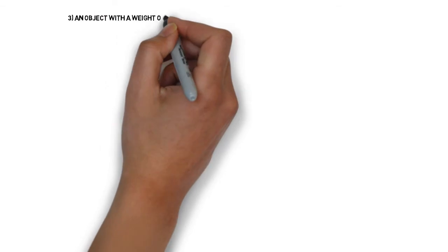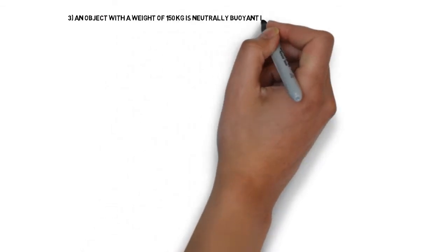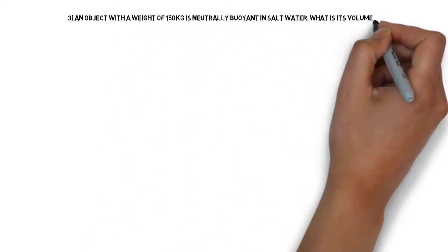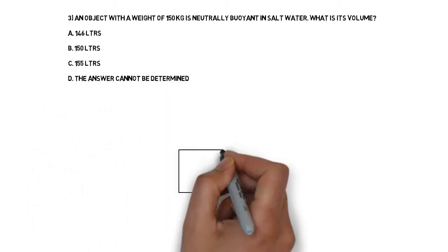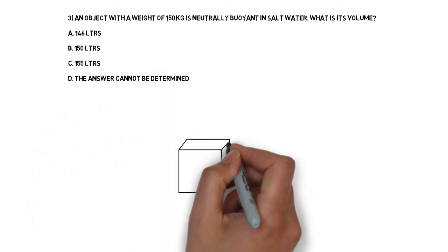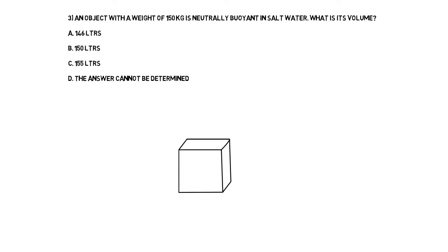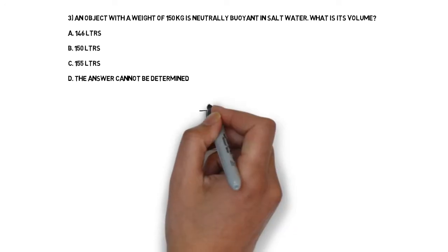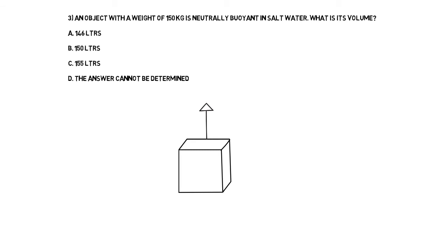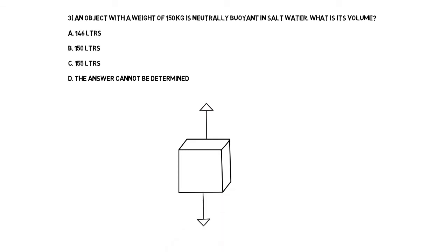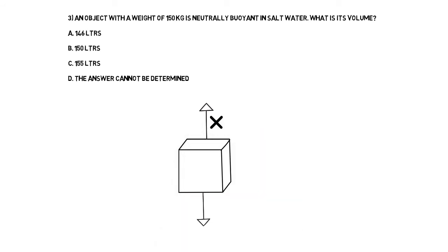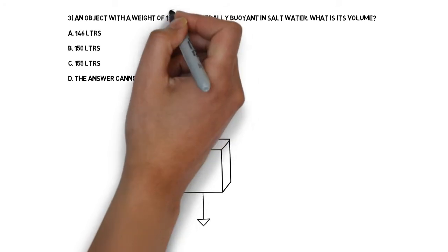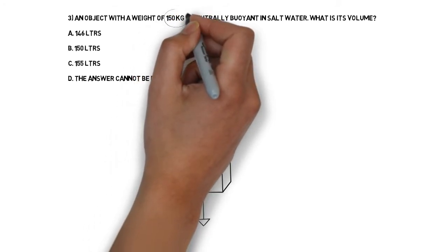So we have a question. What are we going to do? We're going to draw a diagram to describe what the question is saying. We have an object. It has an upward force and it has a downward force. What we need to do is work out what those things are. The upward force we will find by multiplying the volume by the constant based on the type of water it is in.